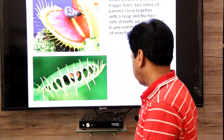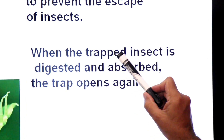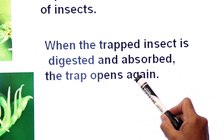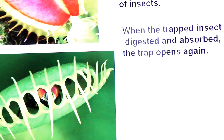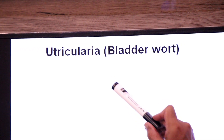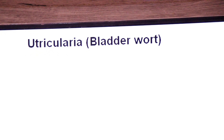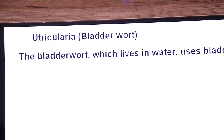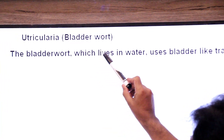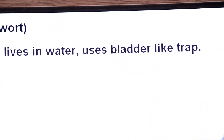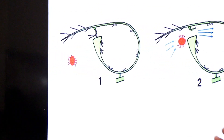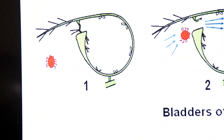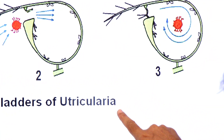Now we will learn about an aquatic insectivorous plant — the bladderwort, Utricularia. This is an aquatic insectivorous plant that lives in water and uses bladder-like traps. Here you see a diagram showing the bladder of Utricularia. This big bag-like structure is called a bladder — a hollow underwater structure with a flexible trap door.